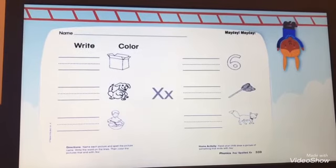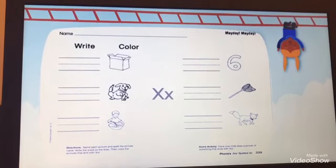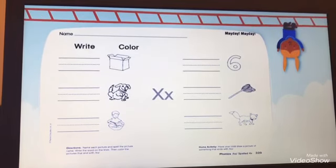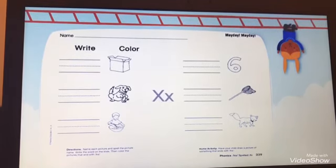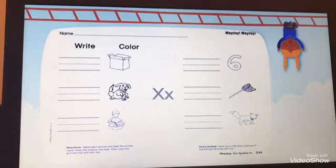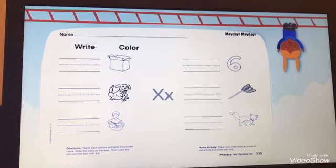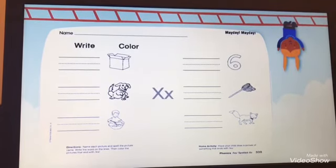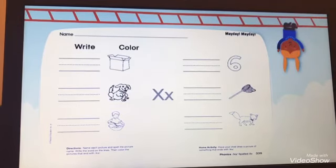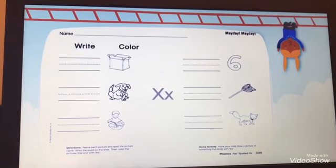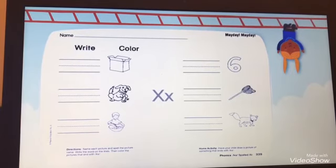Now turn the page, we will do page 339. Did you turn the page? I'm waiting for you. Okay, great! Now let's read the instruction together: Name each picture and spell the picture name. Write the word on the lines, then color the picture that ends with X sound. Okay.